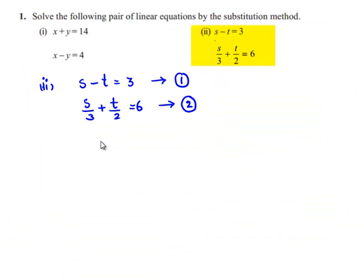Equation 1 can be written as s equals 3 plus t. This is by transposing minus t to the right hand side, so s equals 3 plus t.